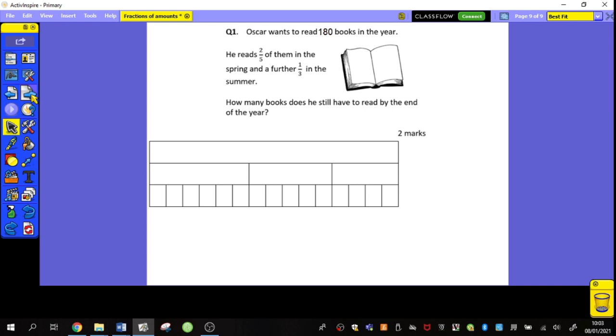So today's problem is here. Oscar wants to read 180 books in the year. He reads two-fifths of them in the spring and a further one-third of them in the summer. How many books does he still have to read by the end of the year?